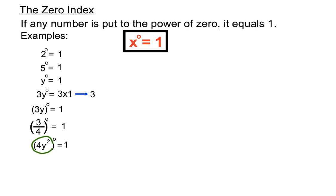Now that's how the zero index rule works. Now why does it work? Let's have a look at a bit of an explanation. I'm going to run through the same question thought of in two different ways. If we have a to the power of four divided by a to the power of four...